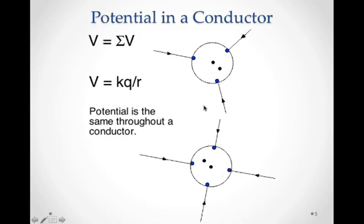This would also be true with four charges. It makes sense that the potential should be the same everywhere, because the electric field is zero and we cannot have a potential difference. To create a potential difference from one location to another, we would have to do work moving a charge. But it wouldn't take any work if there is no electric field — you have to have force to do work. Since there's no electric field within the conductor, there is no potential difference; the potential is the same anywhere inside the conductor.